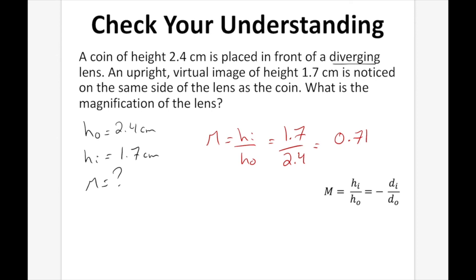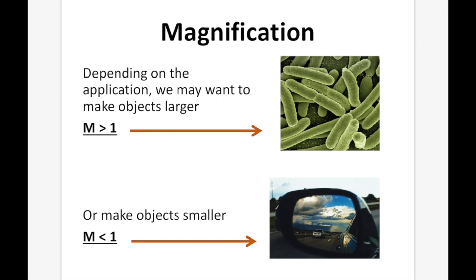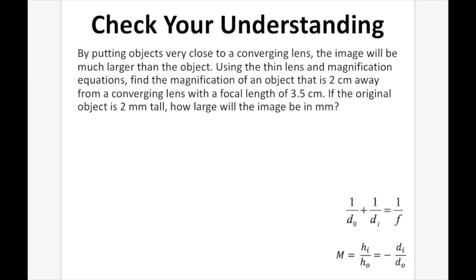Magnification works both ways — we've seen questions where a magnification results in a larger image and ones that are smaller. We might want a magnification greater than one when looking at very small things like bacteria, or less than one when we want a larger field of view, like a side-view mirror or a parking-lot corner mirror, where making objects appear smaller lets you fit more of the scene into view.